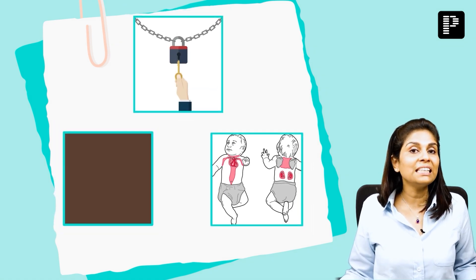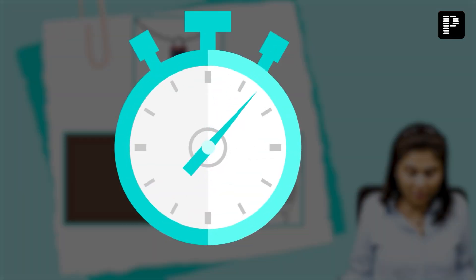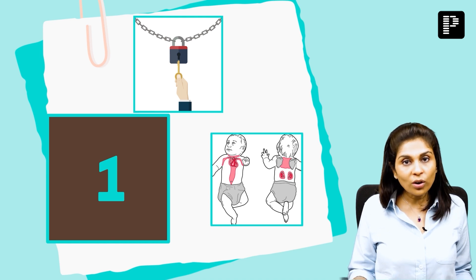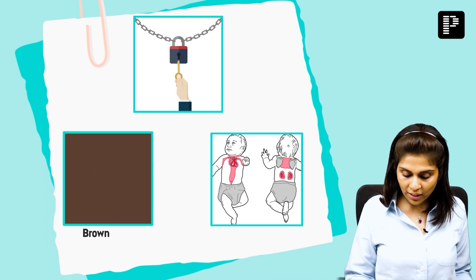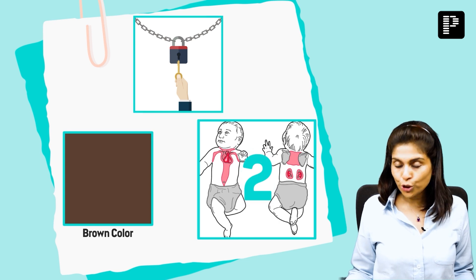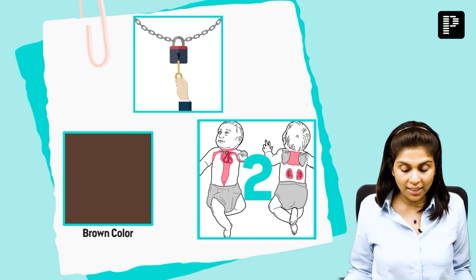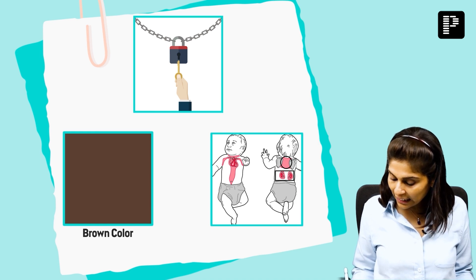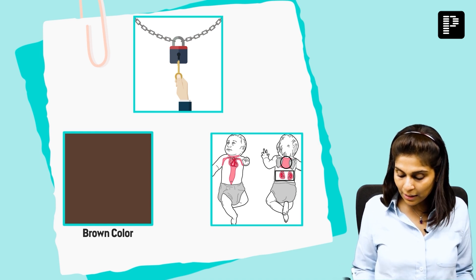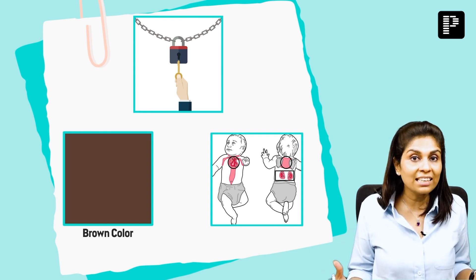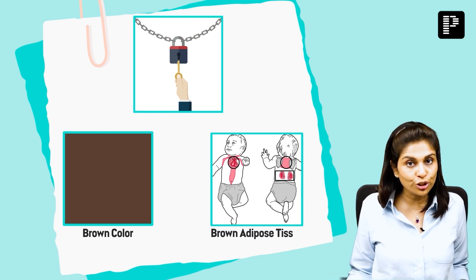Give yourself 45 seconds. The first image is a color — it is brown. The second image shows a distribution: it is distributed in the interscapular region, the adrenal gland, the mediastinum, the heart, and the neck. What is distributed in all these areas? It is brown adipose tissue.